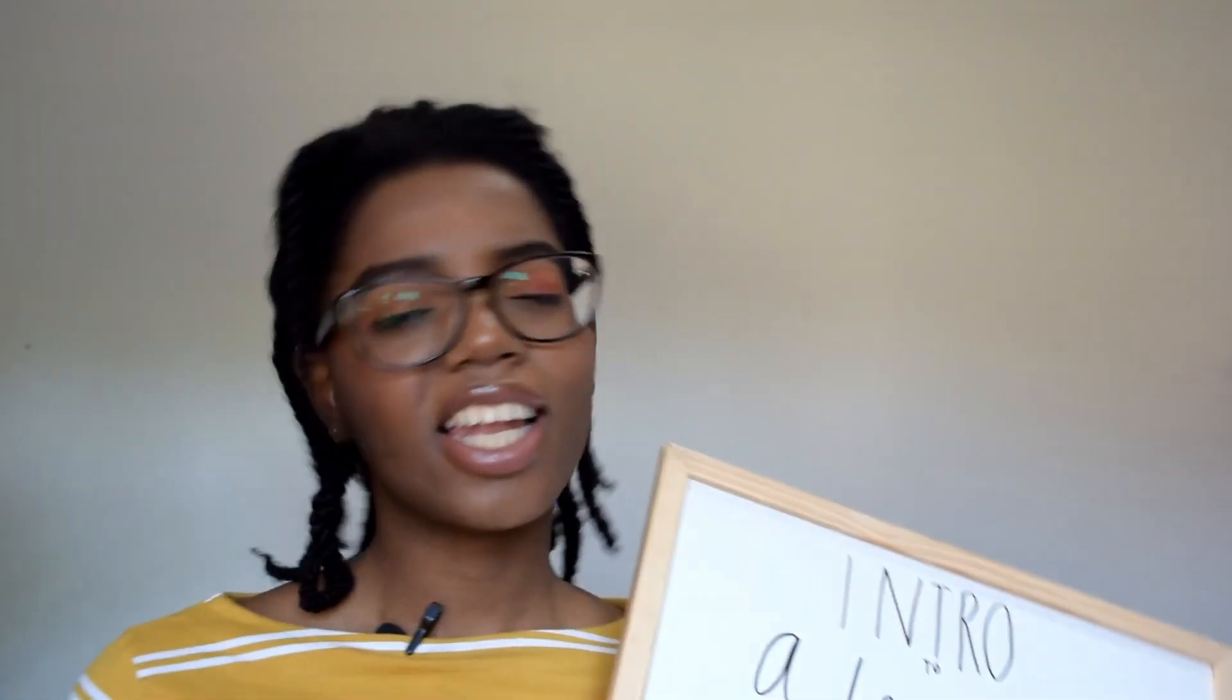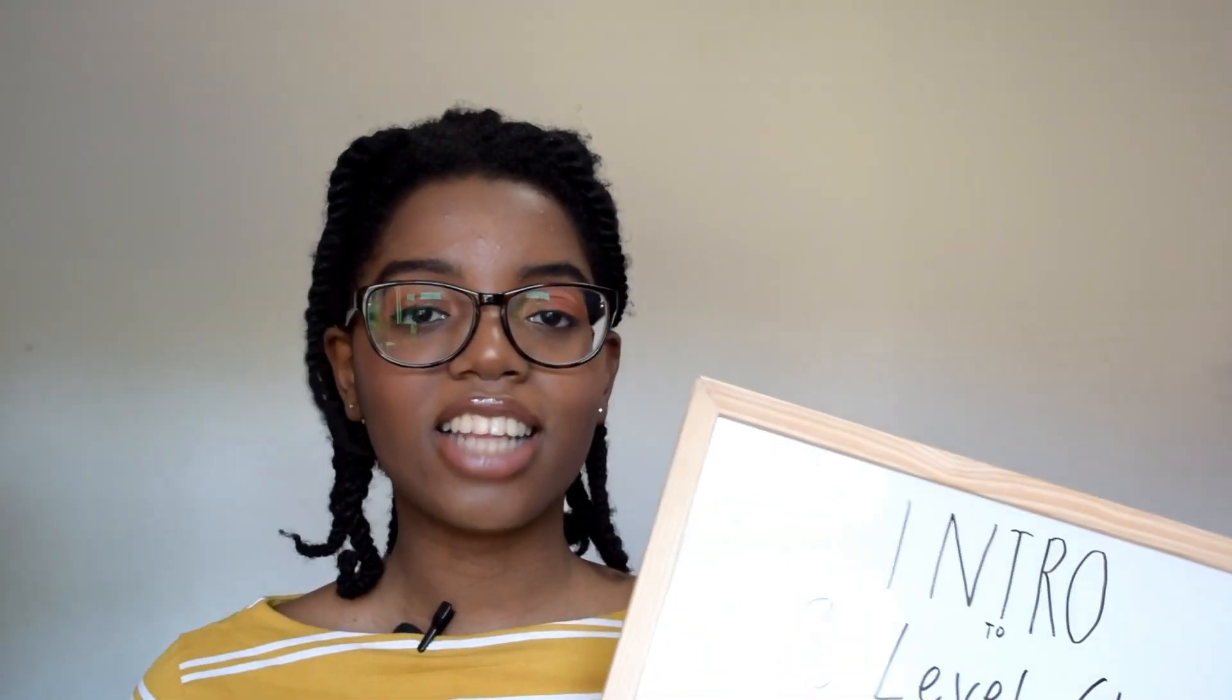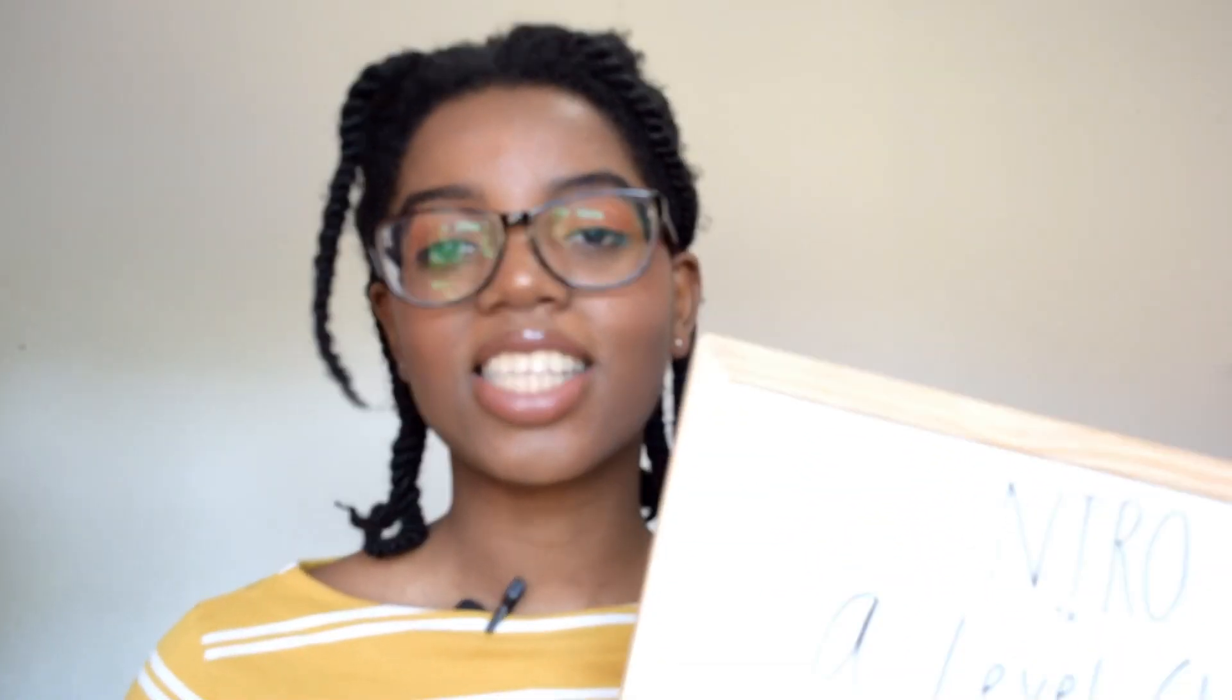Me and my trusty whiteboard are going to be doing a little introduction to electronic structure and that kind of thing, because it's a lot different from what you've learned in GCSE. So be ready to be mind blown from GCSE, you know, we've got the whole 2-8-8-2 structure of how many electrons are in all of the shells.